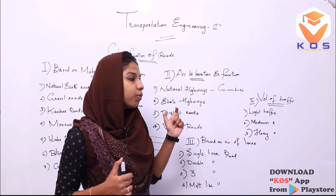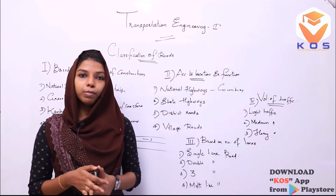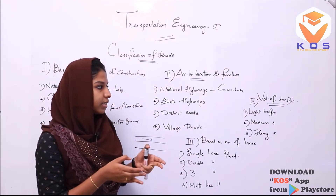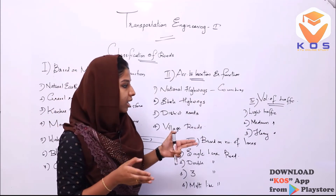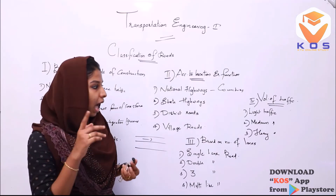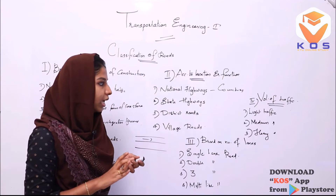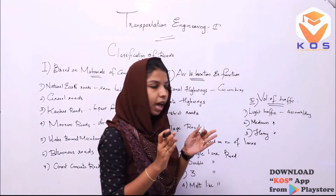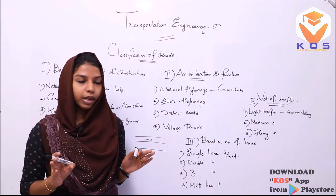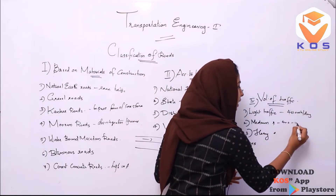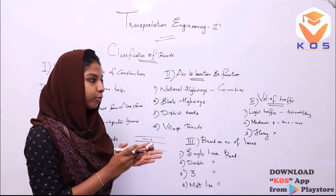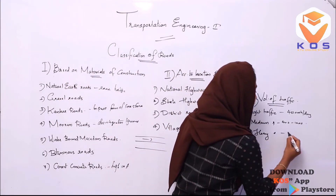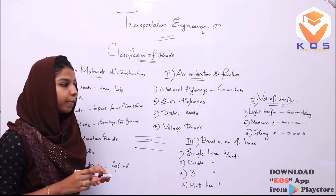The fourth classification is volume of traffic — the number of vehicles passing on a road. Light traffic is a volume of up to 400 vehicles per day. Medium traffic is 400 to 1000 vehicles per day. Heavy traffic is greater than 1000 vehicles per day.